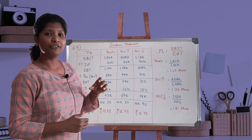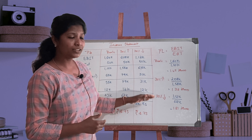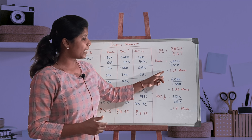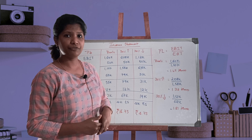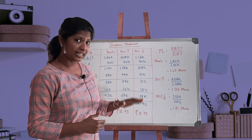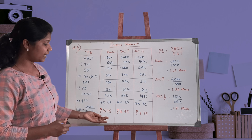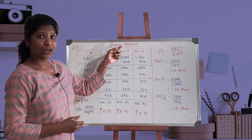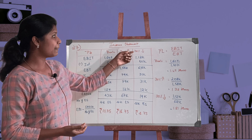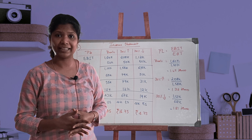Next, the question asks us to find out financial leverage. The formula is EBIT divided by EBT. For all three levels: at basic EBIT of 1,60,000, financial leverage is 1.45 times; when EBIT increases by 30%, it is 1.32 times; and when EBIT decreases by 30%, it is 1.81 times. We can observe that when EBIT increases, EPS also increases, and when EBIT decreases, earnings per equity shareholder automatically decrease.